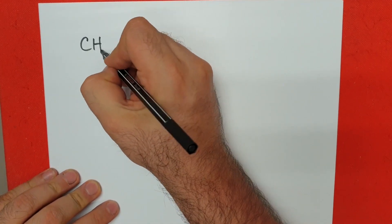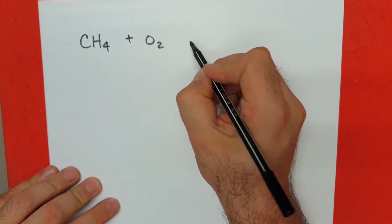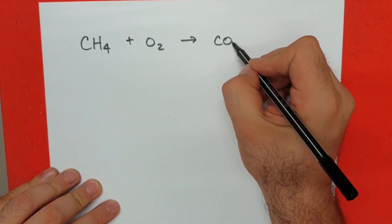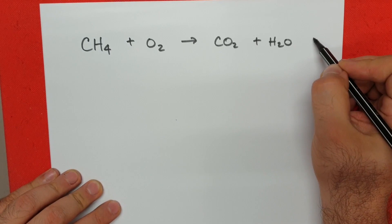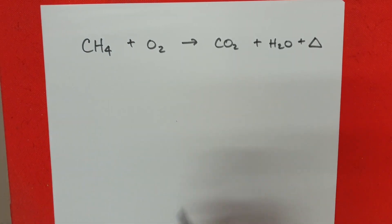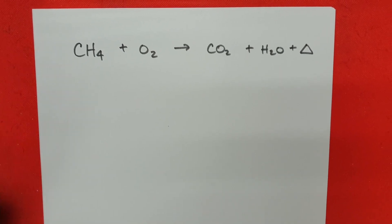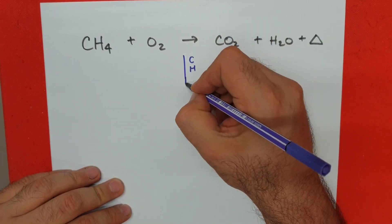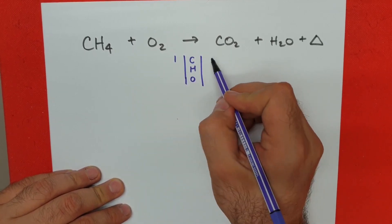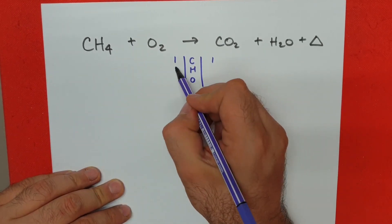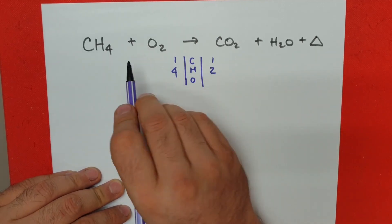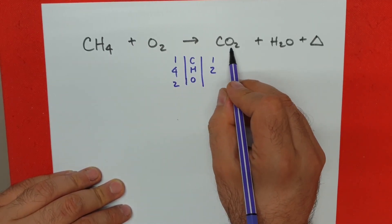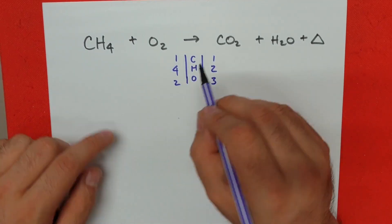Let's try another example: combustion reactions. Combustion reactions always involve a hydrocarbon with oxygen reacting to produce carbon dioxide, water, and some heat. My tip for balancing combustions is to always balance carbon first, hydrogen next, and oxygen at the very last. We have one carbon on this side and one on the other. We have four hydrogen here and two hydrogen on the product side. We have two oxygen on one side and three oxygen split between two compounds on the other. Carbon is balanced, so we leave it alone.